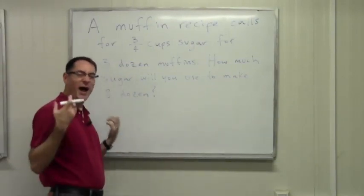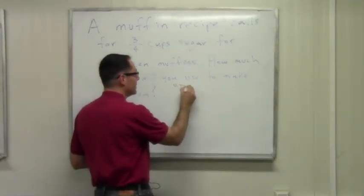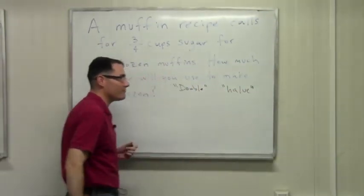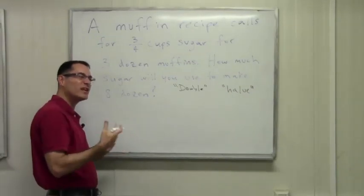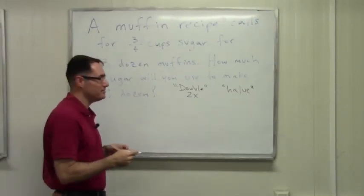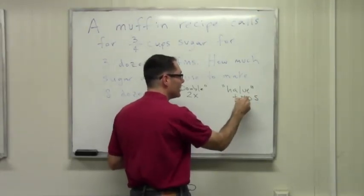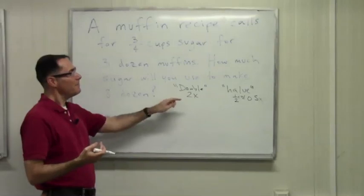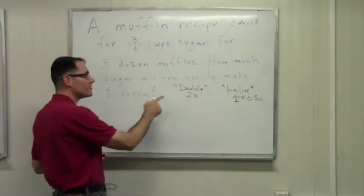When you're doing recipes, some common things you might want to do are double the recipe or halve it. These words — double and halve — mean something in numbers. If you're going to double something, you're going to multiply all the ingredients by 2. If you're going to halve a recipe, you're going to multiply all the ingredients by one half, or 0.5.